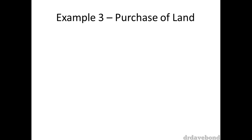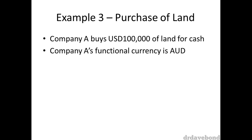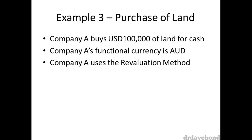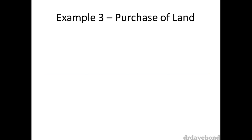Turning now to our last example of accounting for foreign currency transactions. In this case, Company A buys $100,000 US worth of land for cash. Its functional currency is Australian dollar and it uses the revaluation model to account for the land. This purchase occurred on the 1st of July 2005, and Company A has a 30 June financial year end. The land was revalued every four years, and the AUD/USD exchange rate and the US dollar land value have fluctuated over that period.